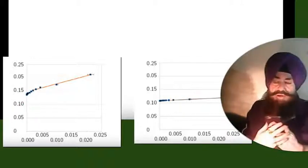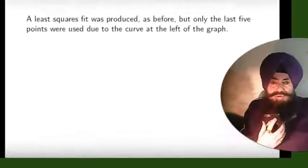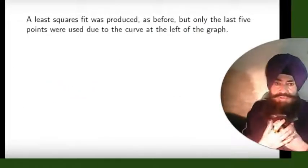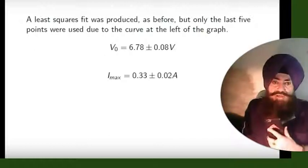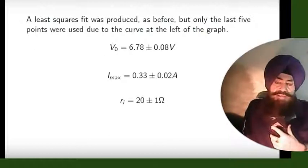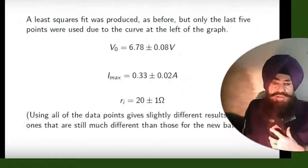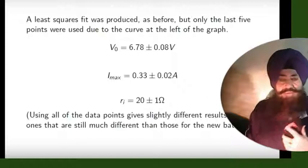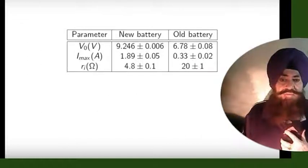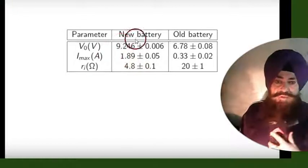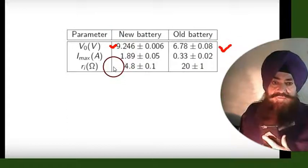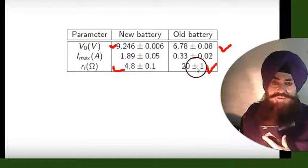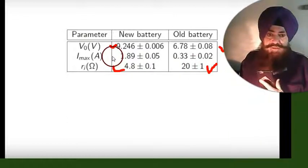Compare the two graphs and find the conclusion. For the used battery, what is V₀, what is Imax, and what is internal resistance? Compare with the previous one. The new battery has a higher source voltage; the old battery has less. The new battery has less internal resistance; the used battery has more. Max current: new battery very good, used battery bad.